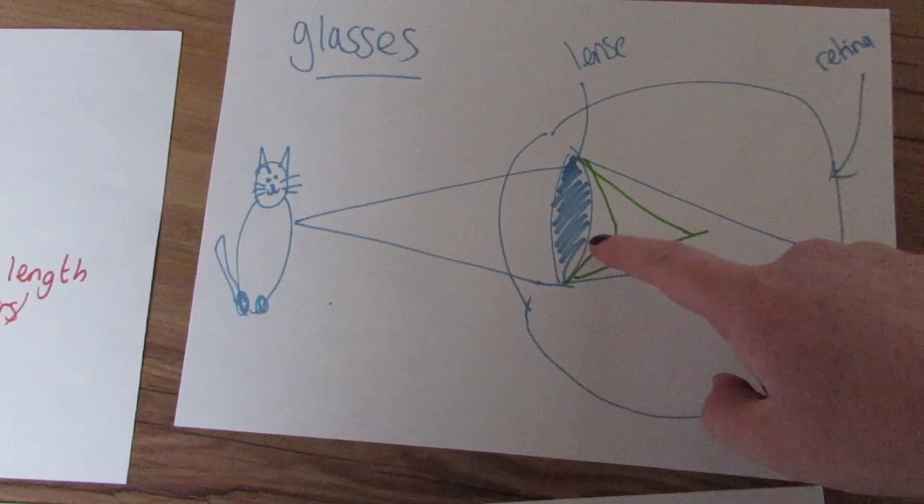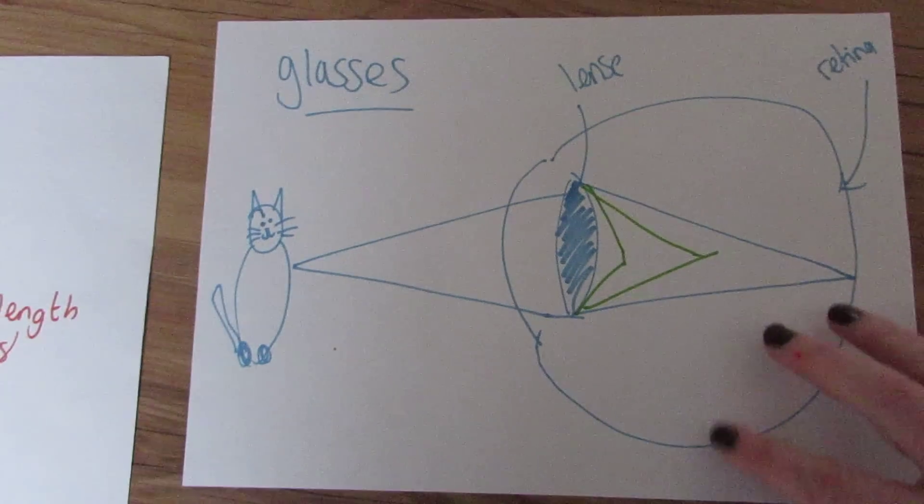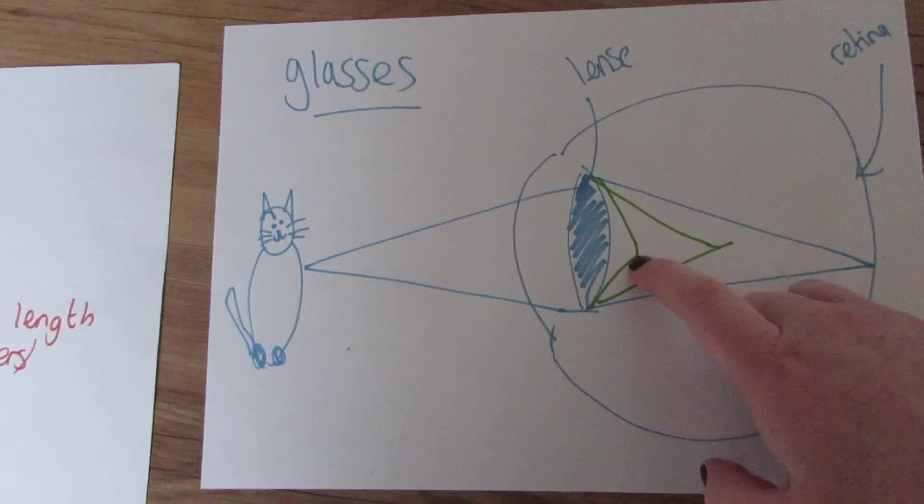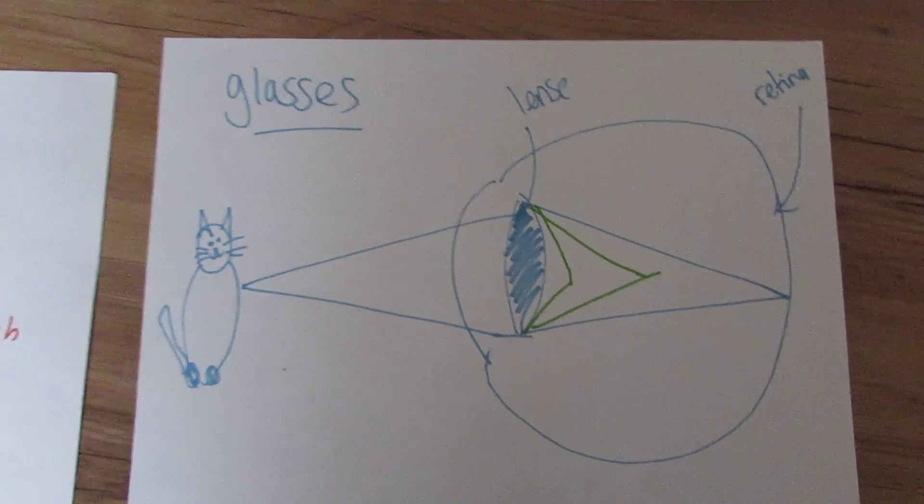But sometimes people have images focusing here, here, or sometimes even over here. Now, if you've got two people that have images focusing here and here, they're going to need quite different glasses.